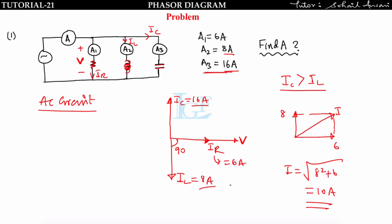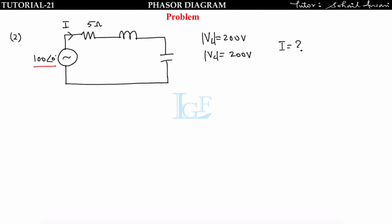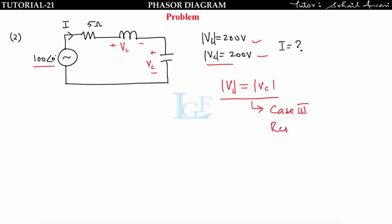In AC circuits, currents must be added as phasors, not directly as in DC circuits. In the next problem, a voltage source is connected to a series RLC circuit. The magnitudes of Vl and Vc are both given as 200 V — they are equal. This is the resonance condition (Case 3), where the whole source voltage drops across the resistor only.